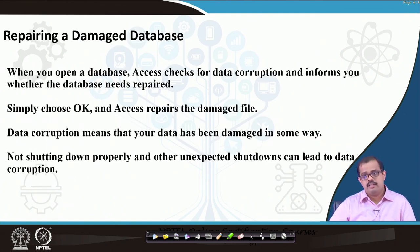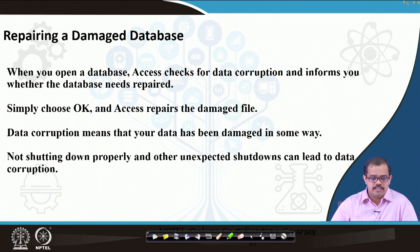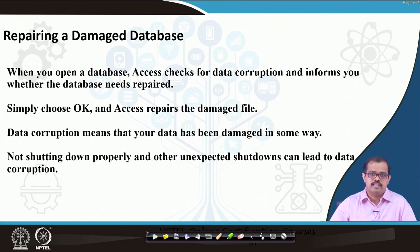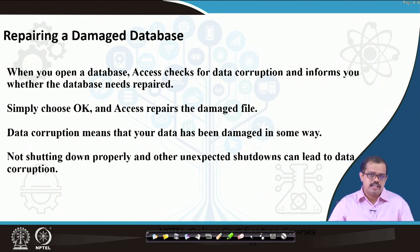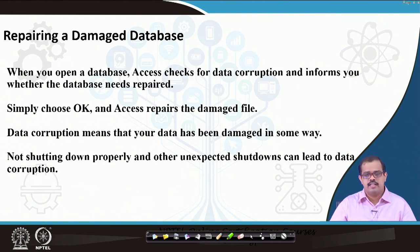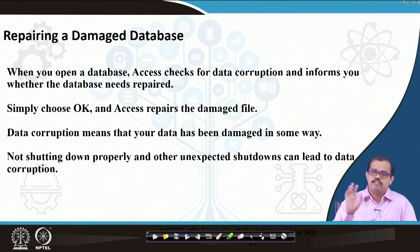Repairing a database: due to certain operations while saving - such as power outages - repairing a damaged database file may be necessary. Go to the same menu as compacting, choose Repair, and Access repairs most damaged files. Corruption can occur due to saving issues, hard disk problems, or unexpected shutdown. Access can repair about 90% of cases, though some databases may fail to be repaired.